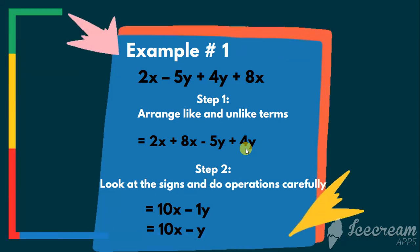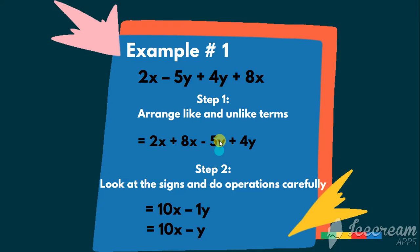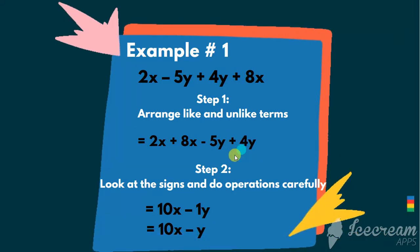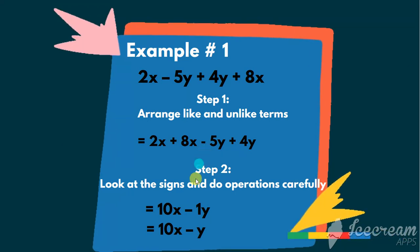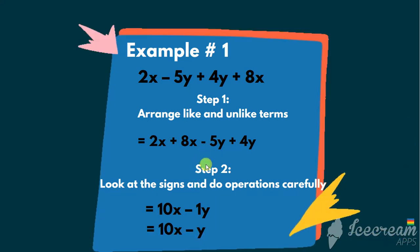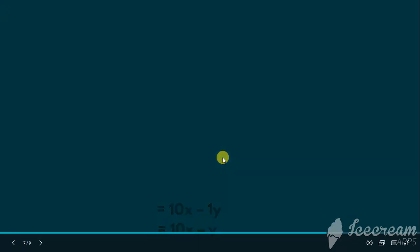If there are different signs, subtract and keep the sign of the bigger number. So 5 minus 4 is 1 and the bigger number sign is minus. So our final answer will be 10x minus 1y which is also written as 10x minus y. Now, let's see our example number 2.